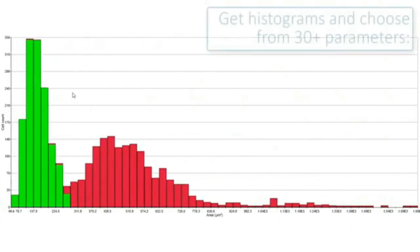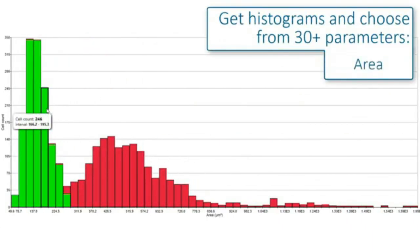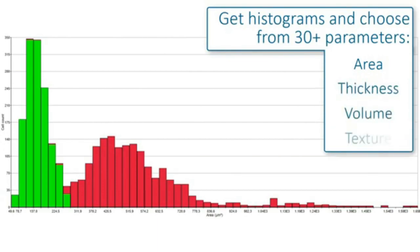You can also view your results in a histogram. Here, the cell area is depicted, but you can choose from more than 30 different morphological parameters, including thickness, volume, texture, and irregularity.